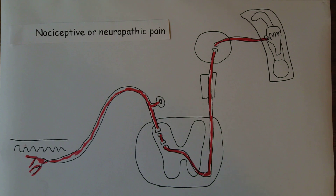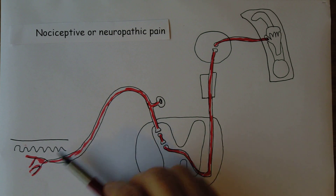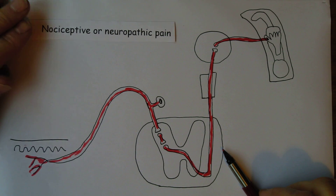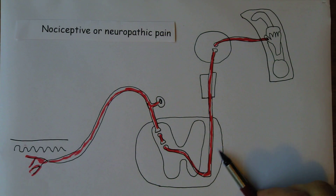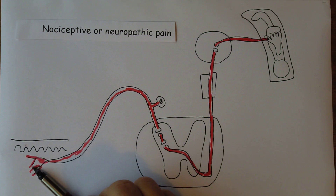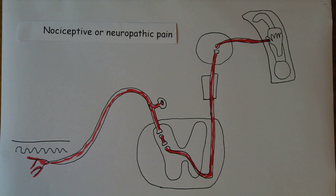We've thought about the causes and features of neuropathic pain — now how do we manage it? We know how to manage nociceptive pain with paracetamol, non-steroidal anti-inflammatory drugs, opiates, and nitrous oxide. But very often these analgesics don't work for neuropathic pain. This is why it's so important to distinguish between nociceptive and neuropathic pain — because the typical analgesic drugs usually don't work for neuropathic pain. We need separate treatments.